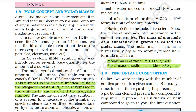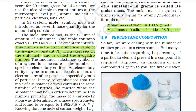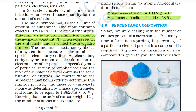1.8 Mole Concept and Molar Masses. Atoms and molecules are extremely small in size and the number in even a small amount of any substance is really very large. To handle such large numbers, a unit of convenient magnitude is required. Just as we denote one dozen for 12 items, score for 20 items, gross for 144 items, we use the idea of mole to count entities at the microscopic level — atoms, molecules, particles, electrons, ions, etc. In the SI system, mole was introduced as the seventh base quantity for the amount of a substance. One mole contains exactly 6.02214076 × 10²³ elementary entities. This number is called the Avogadro constant (Nₐ) and is called the Avogadro number.